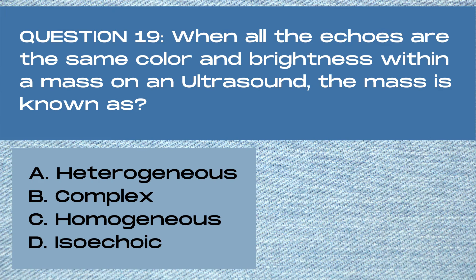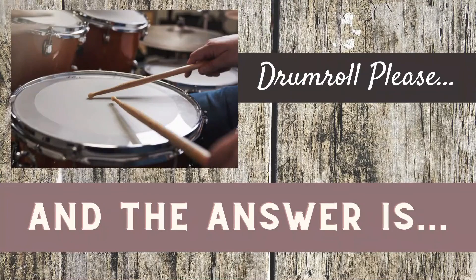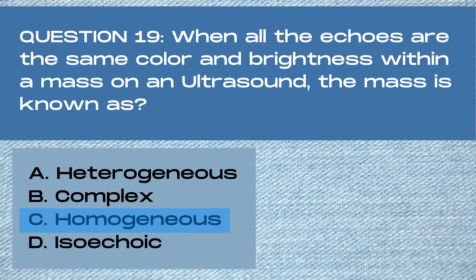Question 19. When all the echoes are the same color and brightness within a mass on an ultrasound, the mass is known as: A. Heterogeneous, B. Complex, C. Homogenous, or D. Isoechoic. And the answer is C. Homogenous. A mass has a homogenous echo texture when all the echoes inside the mass have relatively the same color and brightness levels. This is almost a trick question because you'd think that D. Isoechoic would also apply. However, isoechoic means that the mass is a medium gray color and has the same echogenicity as the surrounding fat, while a mass could be hypoechoic or hyperechoic and still be homogenous.